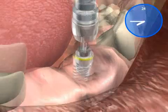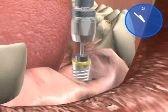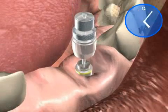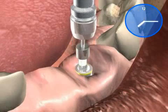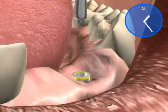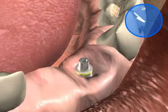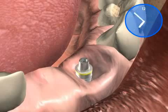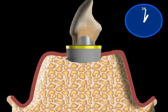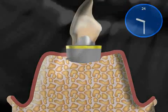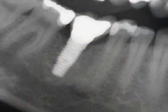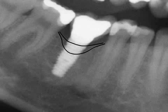Immediate bone reduction after denture insertion has been observed for a long time with various implant types. This caused the upper implant parts to stick out of the gums frequently, a very bad sign from a medical perspective. In the x-ray, you can clearly identify the bowl-shaped bone reduction.